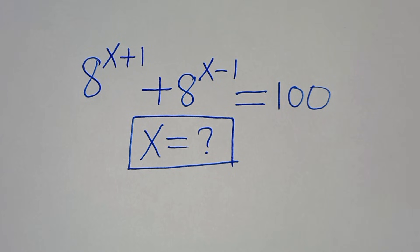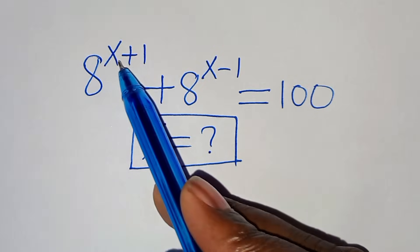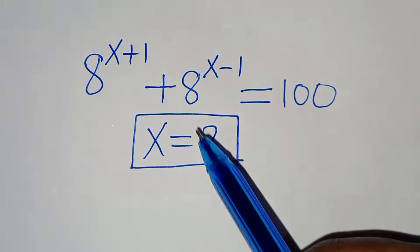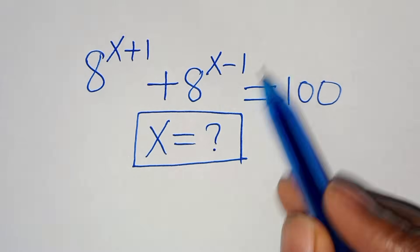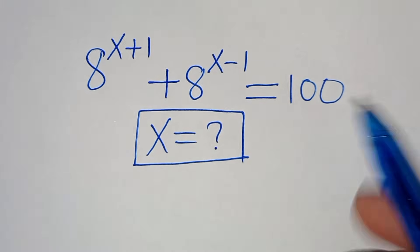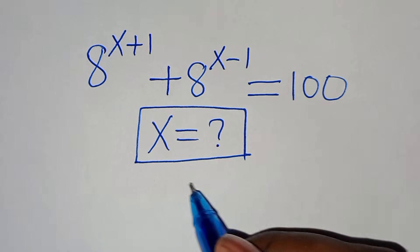Hello everyone, welcome to this exponential equation: 8 to the power of x plus 1, plus 8 to the power of x minus 1, equals 100. What is the value of x?